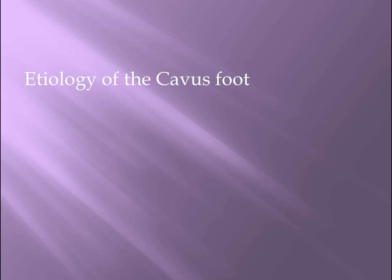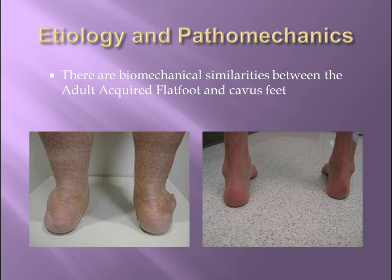So where did this rigid, high-arched, laterally unstable foot come from? In other words, what is the mechanical etiology of this cavus foot type? In reviewing the mechanical etiology of the cavus foot morphology, I would ask you to consider the biomechanical similarities between the adult acquired flat foot and the cavus foot. Years ago, we didn't recognize posterior tibial tendon dysfunction as the cause of adult acquired flat foot because we did not test the muscle strength. So if today we tested the muscle strength of the anterior tibial muscle, could we better classify, stage, and treat the cavus foot? So let's call it the same pathology, just some different muscles involved.